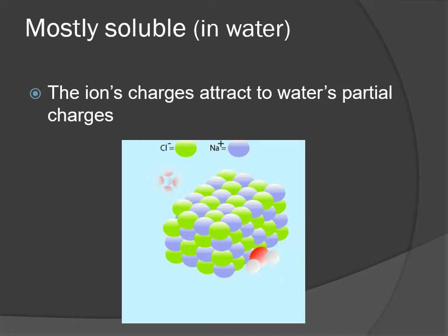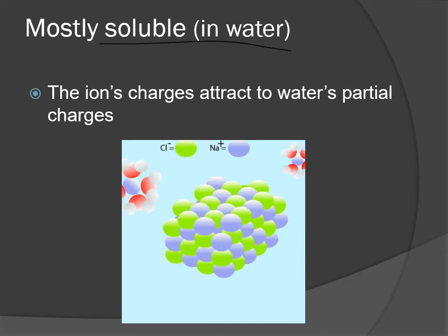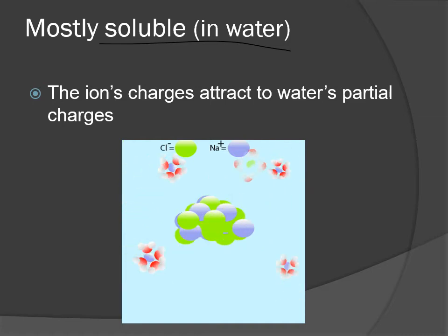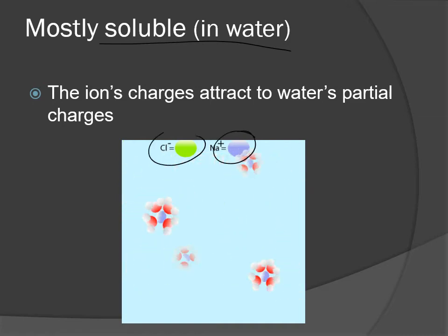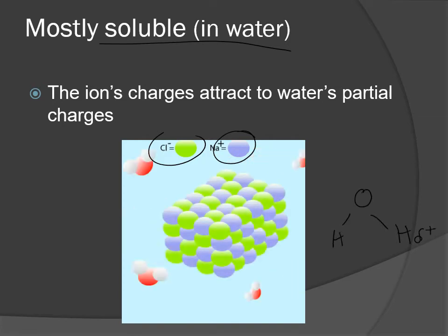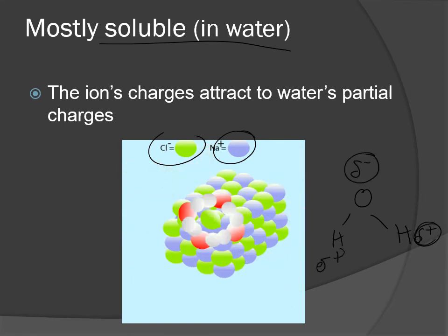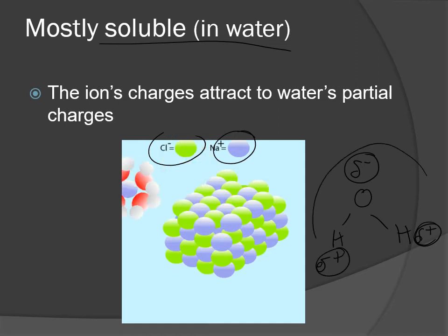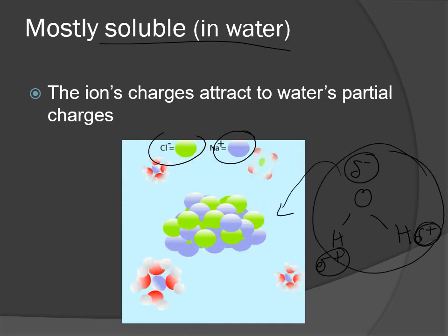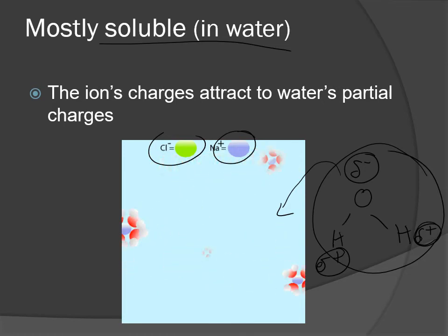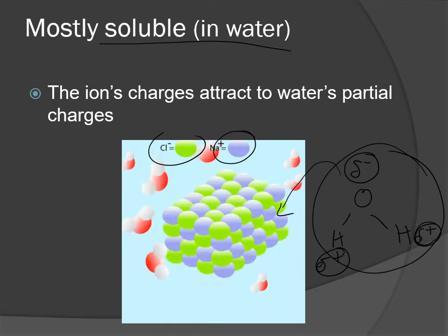A lot of ionic compounds are going to be soluble in water. There are exceptions, but the general trend is that ionic compounds tend to be soluble in water. The ions themselves have charges, and water also has charges—not ionic charges, they are partial charges, so we label them slightly differently, but they are charges. Therefore, the charged water molecules are going to be attracted to the ions and vice versa, and the water is able to get in and break up the structure fairly easily because of that opposite attraction of charges.